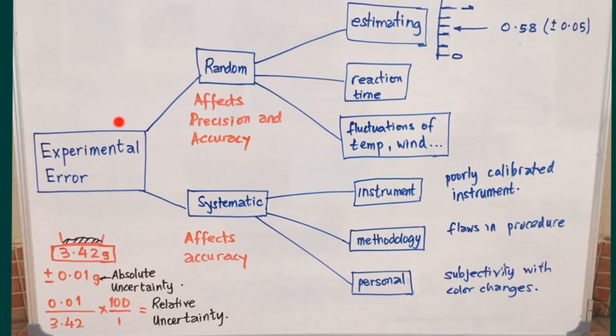So we've divided these experimental errors into random errors and systematic errors. Random errors affect both the accuracy and the precision of your data. Meaning to say that because of random error, the value that you report from the reading of a meter stick or a burette or a thermometer could be off from the exact or accurate value, either being above or below. Reaction time is another example of random error. And fluctuations in things like temperature and wind, as you try to collect your data, can push the value above or below the truly accurate value.